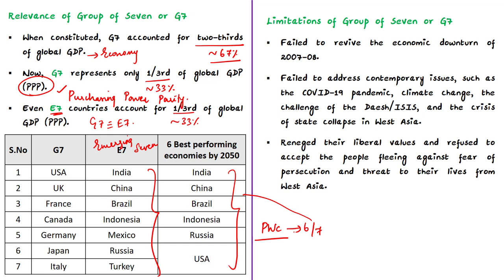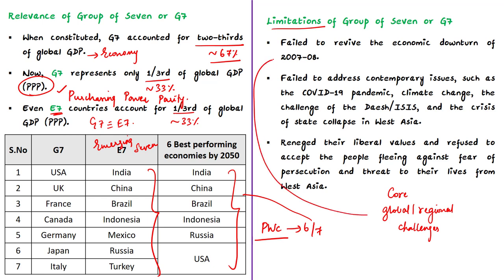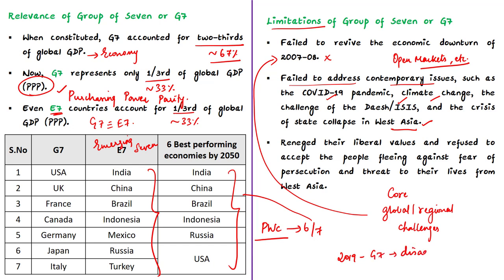The author outlines the limitations of the current G7 format. G7 has failed to revive the economic downturn of 2007–08, which led to the rise of G20. G20 provided a degree of confidence by promoting open markets, promoting stimulus, and preventing the collapse of the global financial system. G7 has also failed to address contemporary issues such as the COVID-19 pandemic, climate change, and more importantly the challenge of ISIS and the crisis in West Asia.